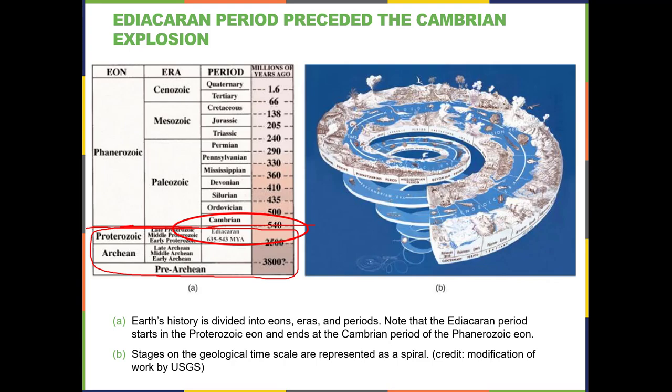The very last period of pre-Cambrian time is called the Ediacaran period. When we find fossils from that period, we find a fair number, but when we look at the fossils in the rock layer just above — from the Cambrian period — there's a huge increase in diversity. So the Ediacaran period was the period right before the Cambrian explosion, which is an explosion of diversity of species.